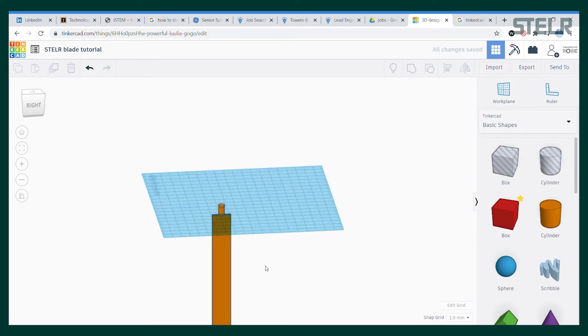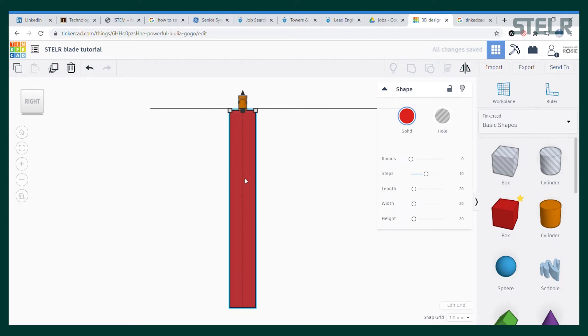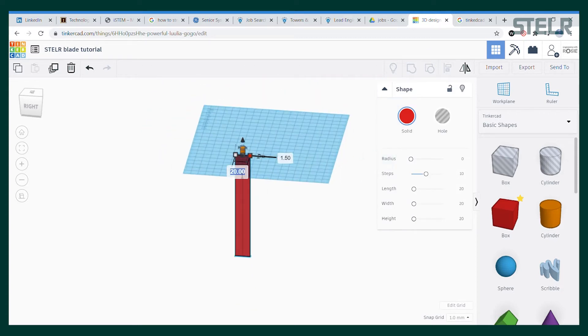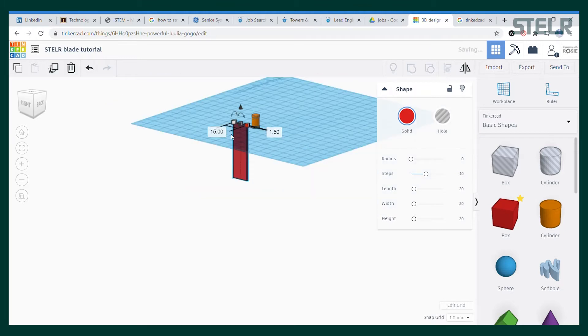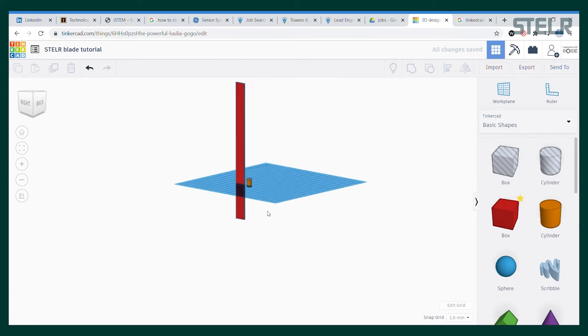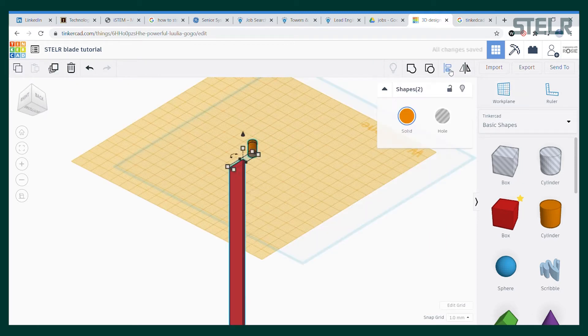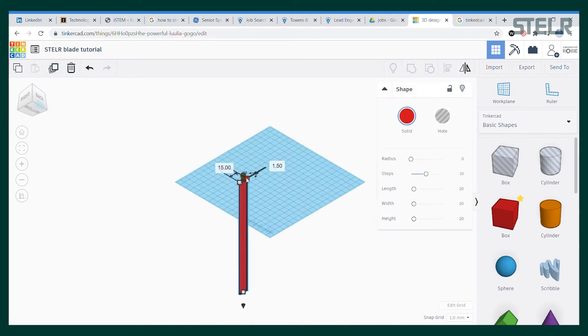If you want to change the length or width of the rectangle now is a good time to do that. So you can just click on the rectangle and change the dimensions. Here is a short fat blade or you can make a really long and skinny blade. You might need to drop it onto the right surface and align it again too. I'll just change it back to the original dimensions: 20 millimeters wide by 151.5 millimeters long.